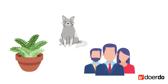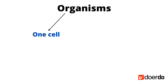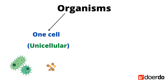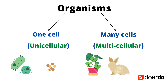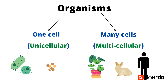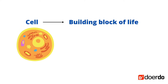Plants, animals, humans, and microorganisms are all made up of cells. An organism can be made from one cell, called a unicellular organism, like bacteria or yeast, or it can be made from many cells, called a multicellular organism, like plants, animals, and humans. A cell is the basic building block of life.